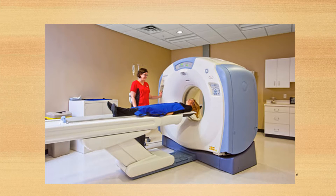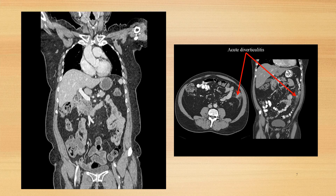A CT scan, or computed tomography scan, uses computer-controlled x-rays to create 3D images of the body, allowing the radiologist to tell how deep a tumor or object is. Conventional CT scans take pictures of slices of the body, like slices of bread, a few millimeters apart. A major advantage of CT scans is their ability to image bone, soft tissue, and blood vessels all at the same time.